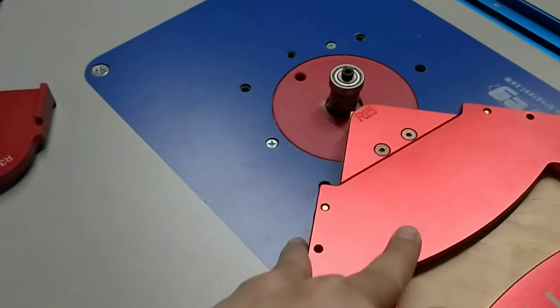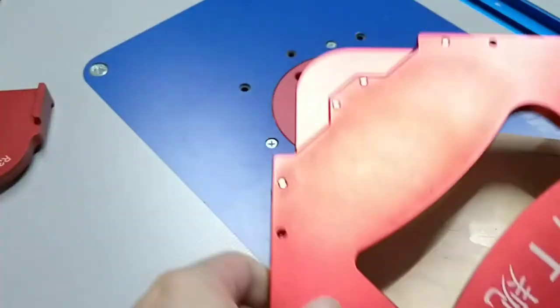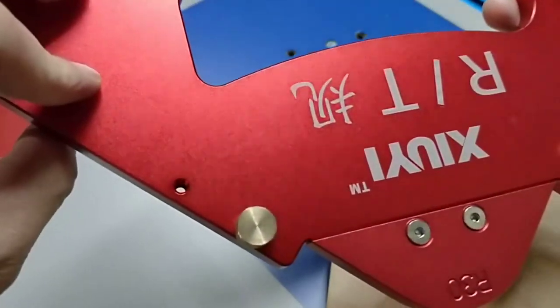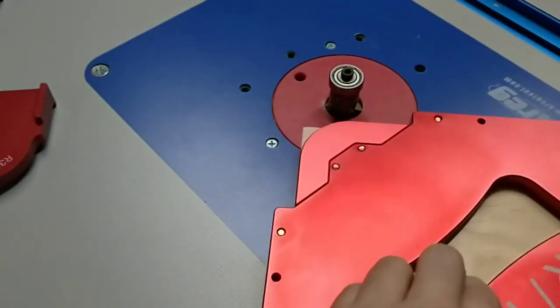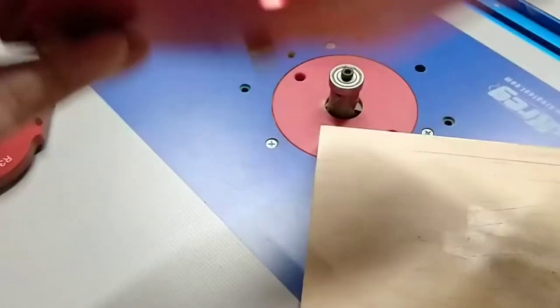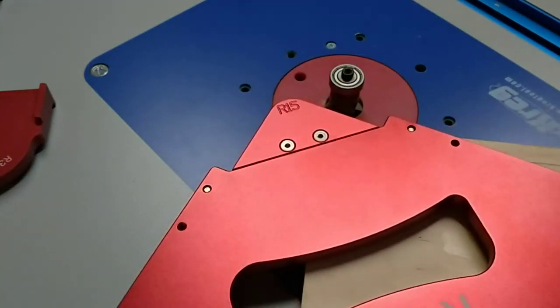Alright this way you're done, you want to do the other side. What is this? This is R-30, R-30 on this side, flip it over and you're ready to go. I like it.